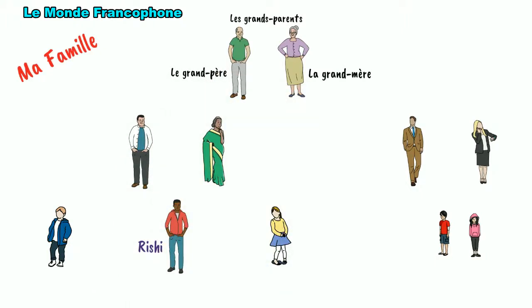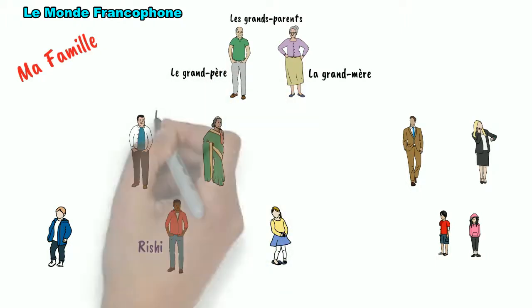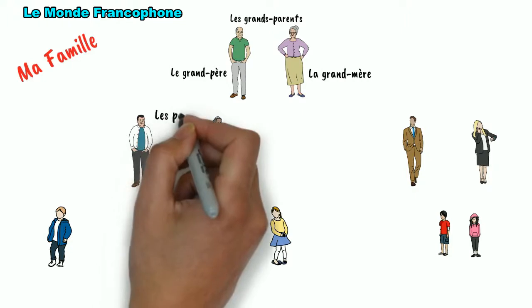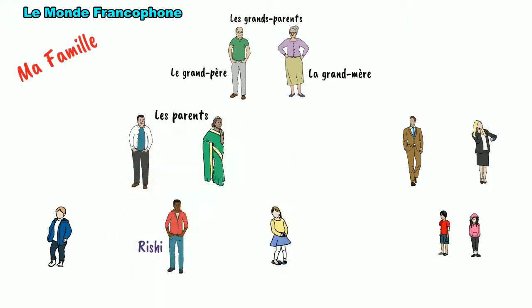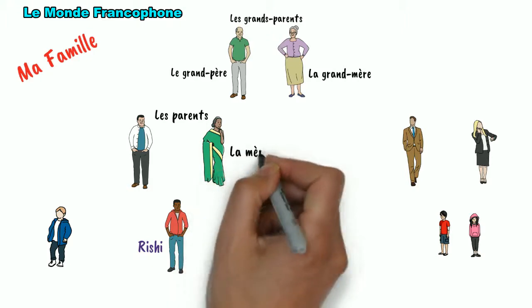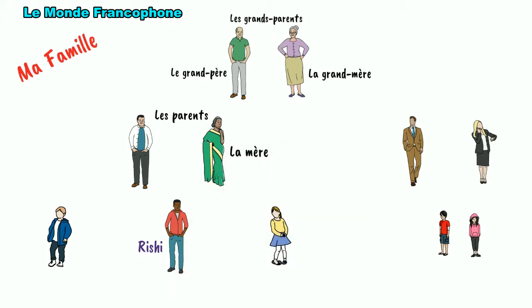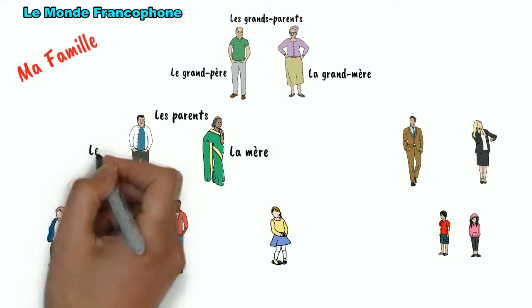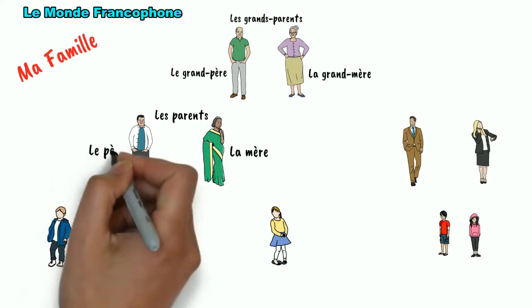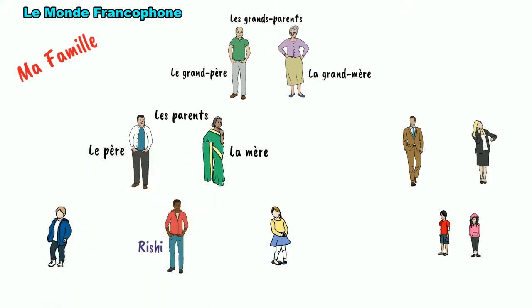Parents in French is les parents. Parents again comprises of father and mother. So mother is la grand-mère and father is le grand-père. Understood till here? Now comes the next level in this family tree.